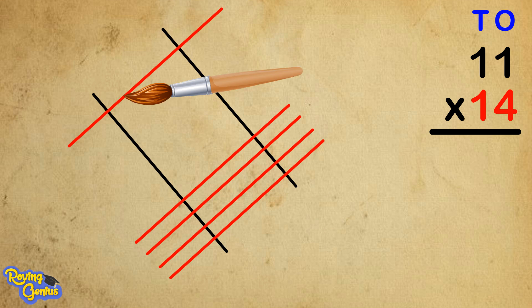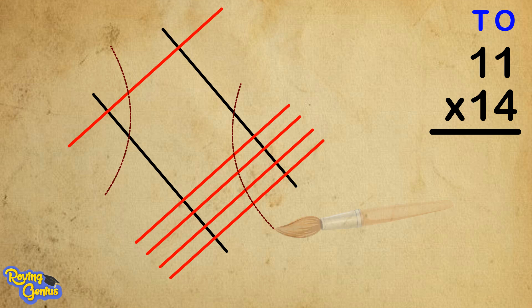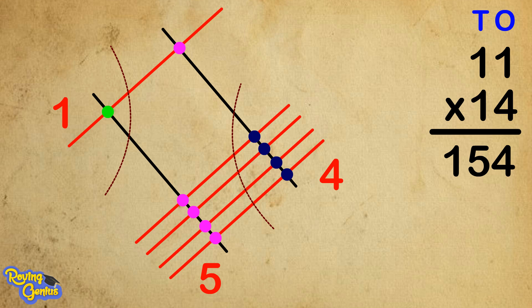Now let's divide the parts. In the first part we have one, in the middle part we have five, in the last part we have four. So the answer is 154. Now let's try a more difficult one.